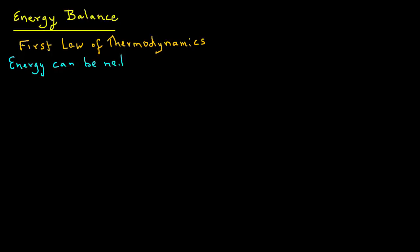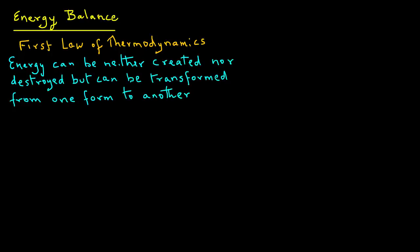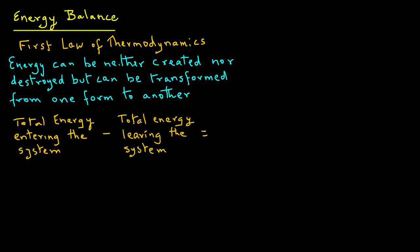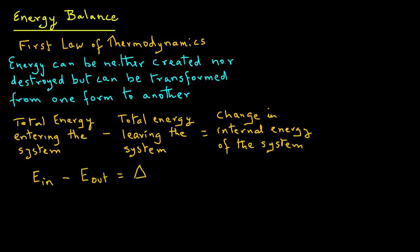We can write this as the total energy entering a system minus total energy leaving a system equals the change in total energy of that system. So, we can write this also as E in minus E out equals delta E system.